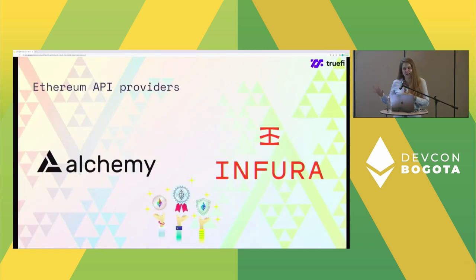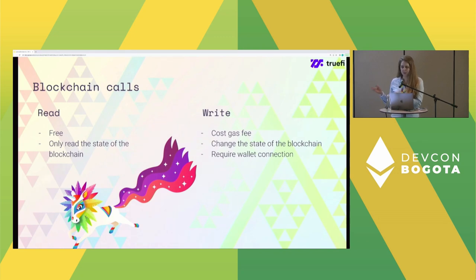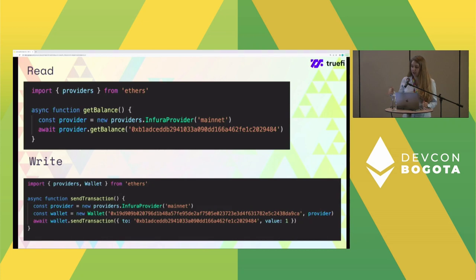Let's see how to build a decentralized application. We have different Ethereum API providers like Alchemy and Infura, and we can connect to blockchain through them. There are different blockchain calls: read calls are totally free and only read state of the blockchain, while write calls cost a gas fee, require wallet connection, and change the state of the blockchain — that's why they need a private key and wallet.